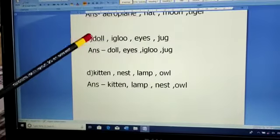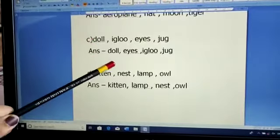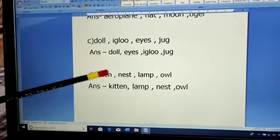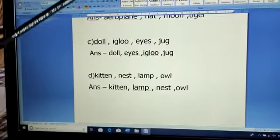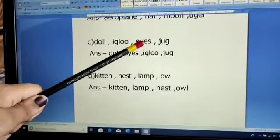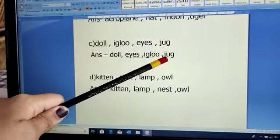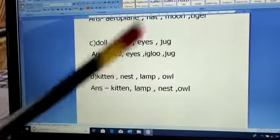So D comes first. Doll will be the first one to come in the sequence. After D what comes? E. So eyes will be the second one and I for igloo will be the third one and J for jug will be the fourth one.